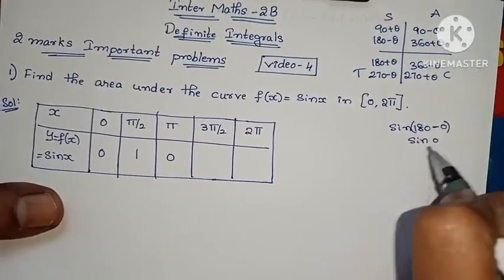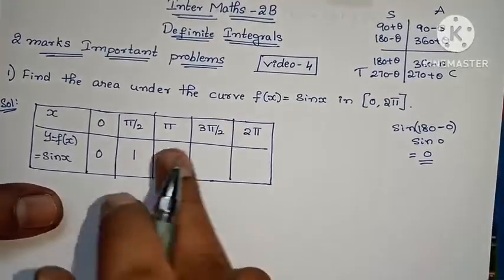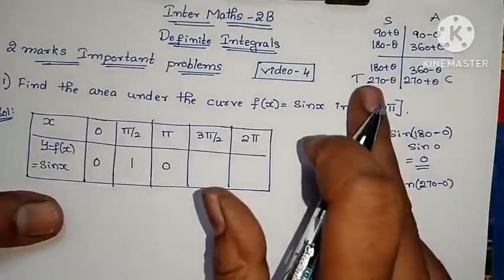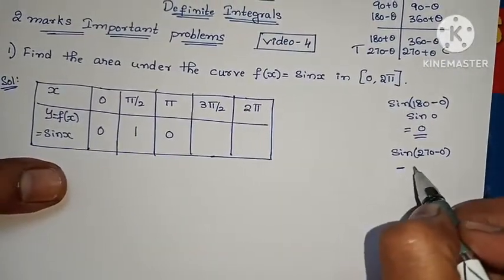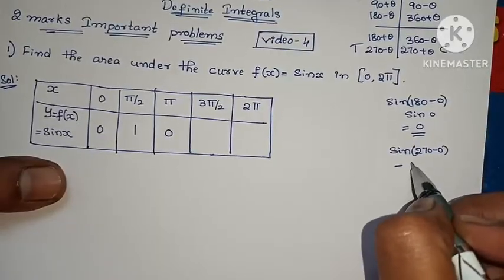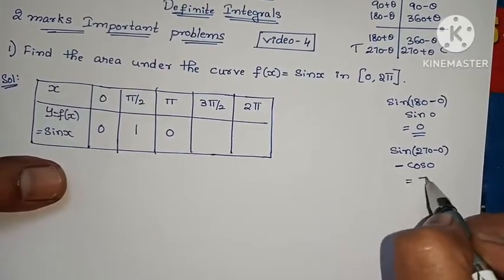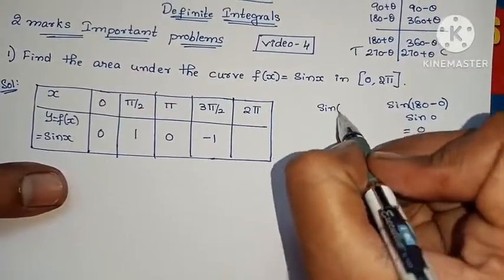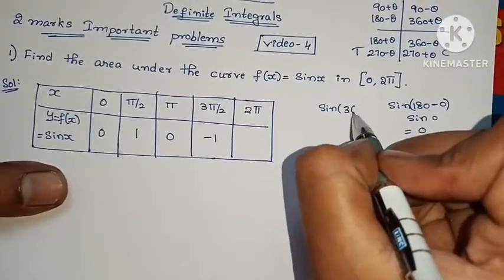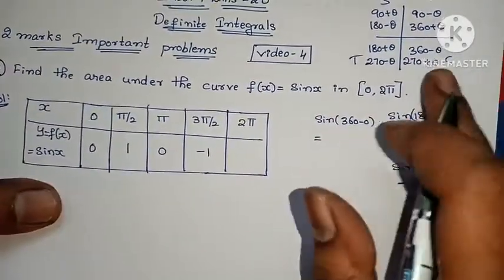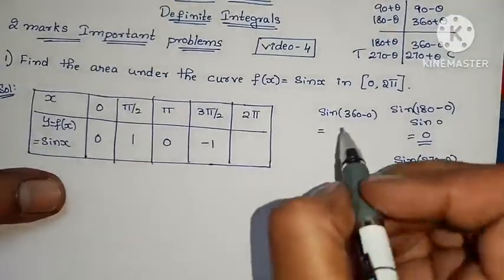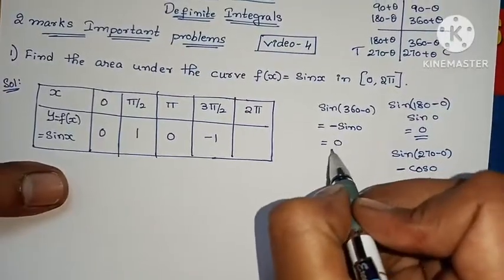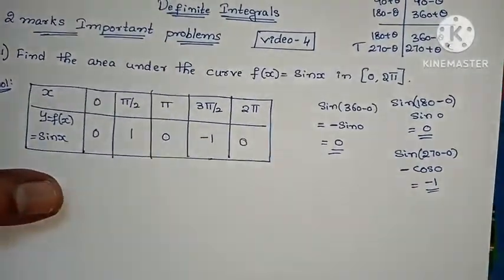sin 0 = 0. At 270°, 270° minus 0° is in the third quadrant. Third quadrant: sin is negative. cos 0 = 1, so minus 1. At 360°, sin x: 360° minus 0° is in the fourth quadrant, sin x = 0. So these values are variable numbers we can use to draw the graph.